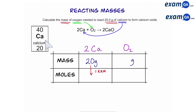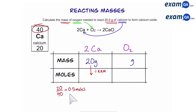You're going to need your periodic table. There's calcium — there are always two numbers, and you want to select the larger number. In this case it's going to be 40. So we're going to do 20 divided by 40, and that gives us 0.5 moles.